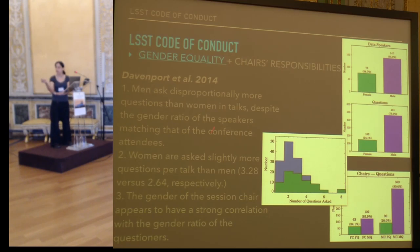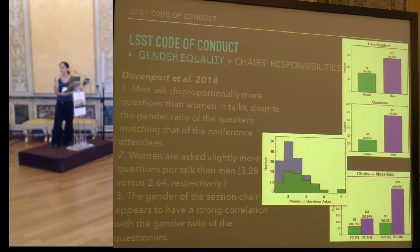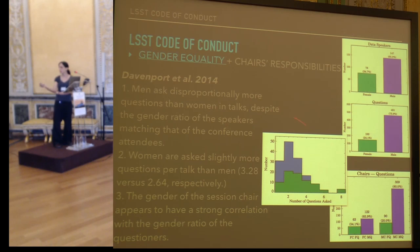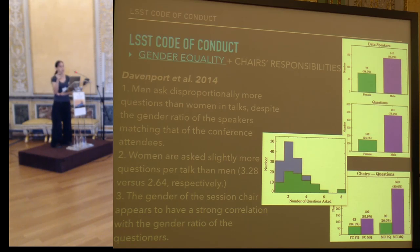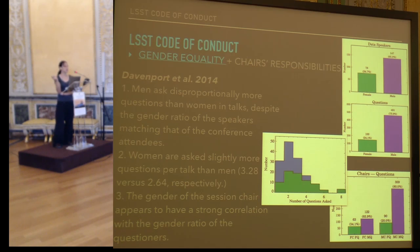Davenport et al. conducted a couple of studies at various AAS — American Astronomical Society — meetings about the participation of women and how women ask questions in talks. A couple of things are really interesting here. Women are asked slightly more questions than men. Women tend to ask fewer questions in proportion to their representation at the meeting. And the number of questions asked by women depends quite strongly on who is chairing — on the gender of the person chairing the session. It is not clear whether that's because a non-male chair is more attentive and allows non-males to ask questions, or because women are simply more comfortable asking questions in sessions chaired by women.